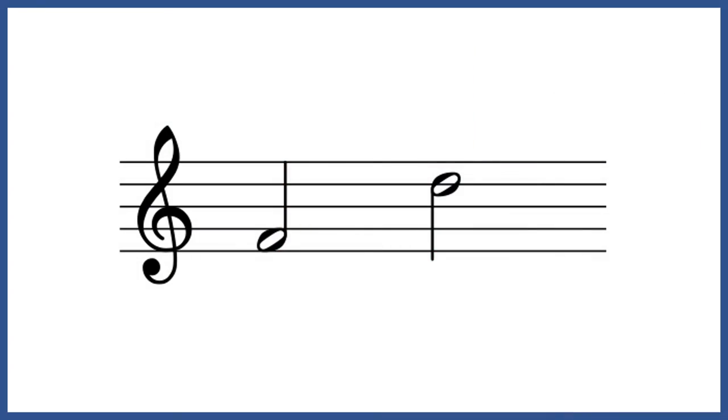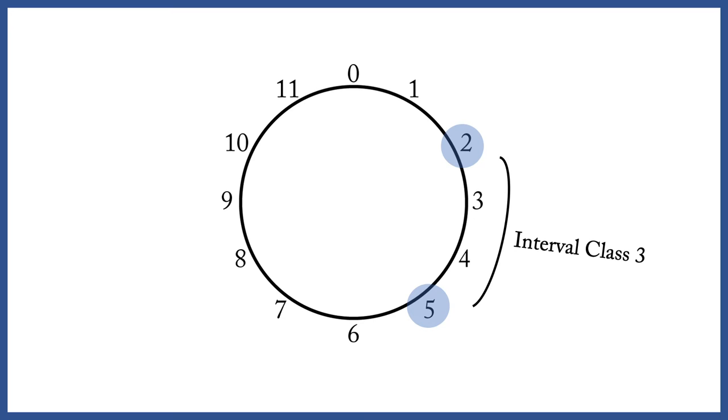You might have guessed that we have one more perspective on intervals. What if we don't care about the order in which two pitch classes occurred? What if we only care about the space between them? We'll simply look at the distance between them on the clock face. We could call these unordered pitch class intervals, but that's a mouthful — so we'll simply call them interval classes instead. Going back to the previous example, this F to D, this F to D, and this D to F are all interval class 3, because the shortest distance between them on the clock face is 3 semitones.